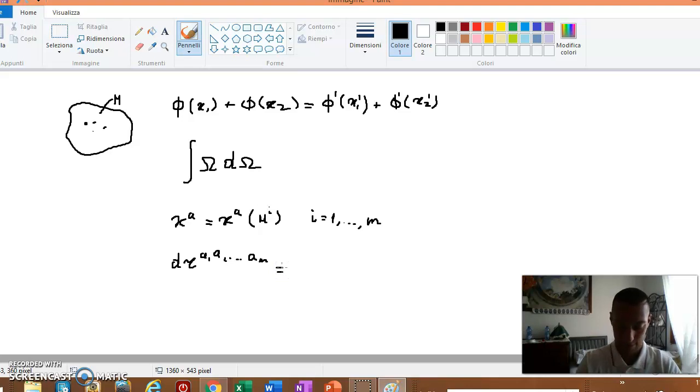Let's define it as Kronecker delta with indices a₁ v₁, a₂ v₂, through aₘ vₘ. That's the definition.